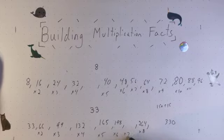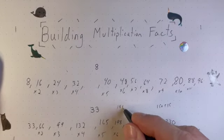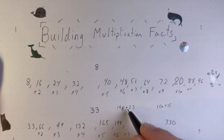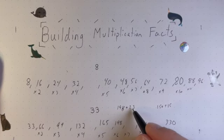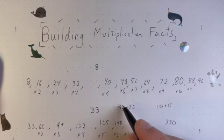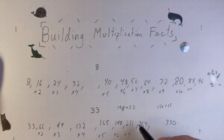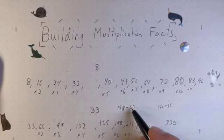To get my times 7, I'll add 198 plus 33. And the nice thing is 198 is really close to 200, so if I take 2 away from this 33 and add that to this, I'll get 200. And I'll get 231, because 31 is 2 less than 33.